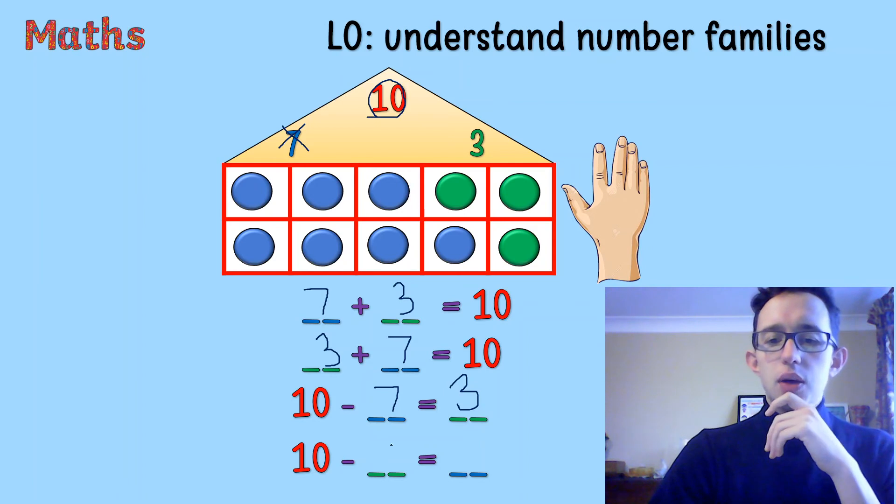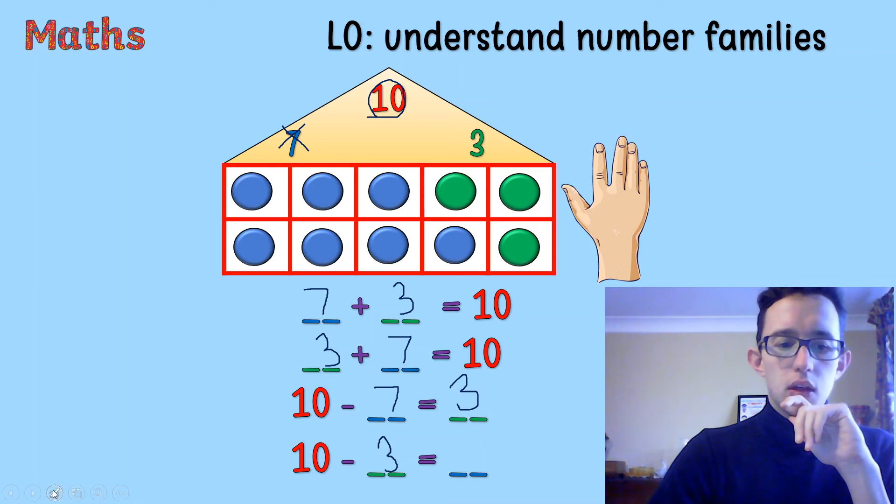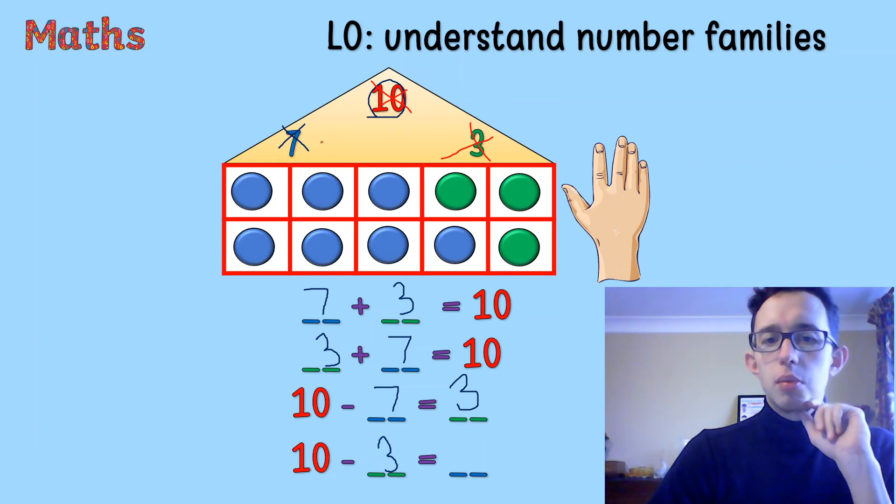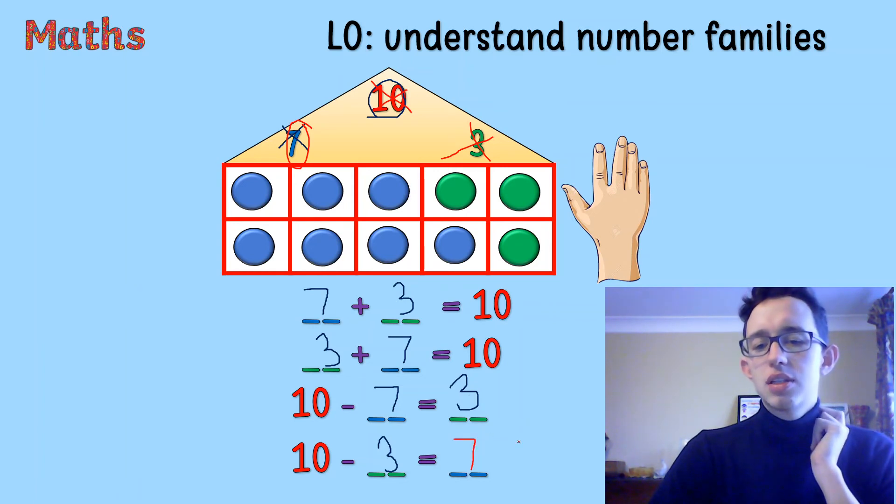And then 10 take away 3. So this time, we'll take a, we'll use the red colour. So we used up the 10. We used up the 3. So the number that we have left is the 7. So that would be that number that's left. Okay, hopefully that makes a bit of sense.